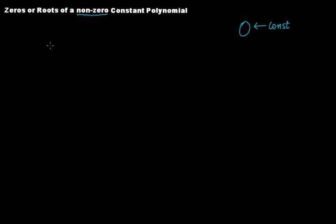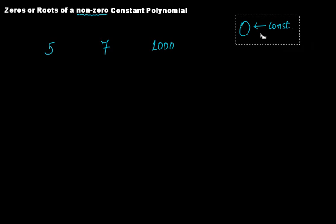We know that if we simply write zero, zero is also a constant polynomial. Five is also a constant polynomial, seven is also a constant polynomial, thousand is also a constant polynomial. But zero is a special kind of constant polynomial with certain different properties. In this topic, we'll focus on zeros or roots of a non-zero constant polynomial, that is constant polynomials other than zero itself.